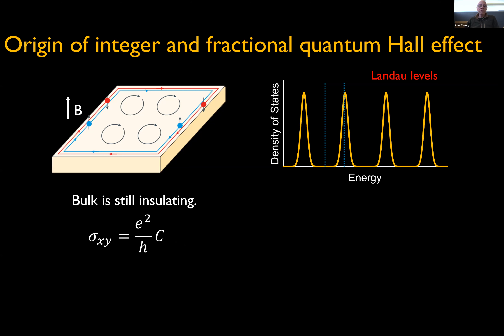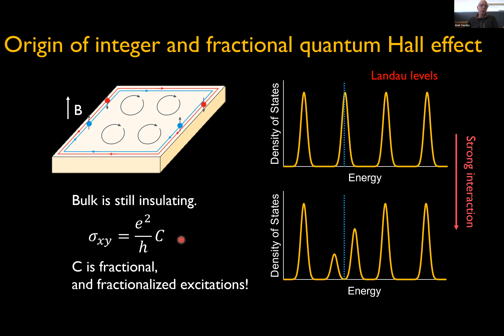When the Fermi energy lies within one of these gaps, the conductivity is no longer quantized, but if interactions are present, the system may open a correlated gap where the transverse conductivity becomes quantized in a fraction of e² / h. The Chern number then becomes a simple fraction of an integer.